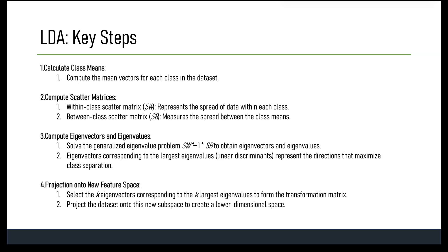Next, we compute eigenvalues and eigenvectors by solving the generalized eigenvalue problem using the equation SW to the power of minus 1 multiplied by SB. SW⁻¹ represents the inverse of the within-class scatter matrix. The eigenvalues represent the magnitude and variance in the direction of the corresponding eigenvector, while eigenvectors corresponding to the largest eigenvalues are the linear discriminants that provide the best separation between classes.